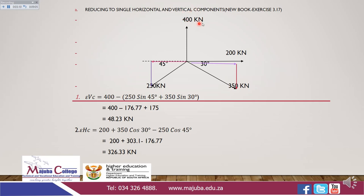For the sum of vertical components: we have the 400 kN force towards north, and two forces towards south. So it will be 400 minus (250 × sin 45° + 350 × sin 30°). Calculating this gives a sum of vertical components equal to 48.23 kilonewton. When reducing forces, we state the direction towards the larger force — so this will be 48.23 kN north.